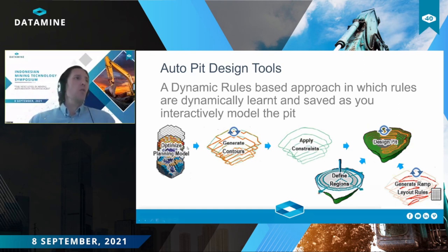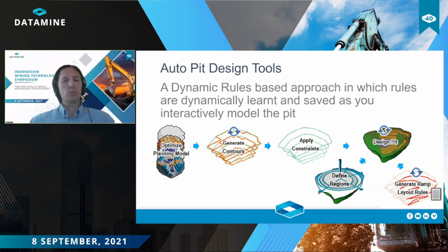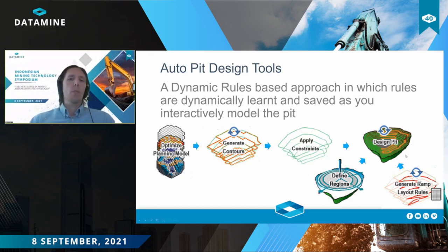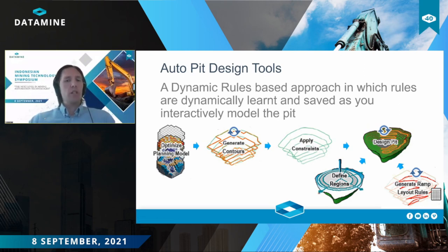The workflow of auto pit design starts from the planning model as an input. You can use that to generate contours around pushbacks using an attribute of the block model, and then using those contours as a starting point, or digitizing additional strings, you can define your constraints — a closed string that indicates there must be a void inside that string. You can define as many constraints as required to get a lot of detail in the mine plan. You can define different slope regions manually, using different strings, or using block model attributes.